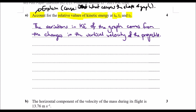We can start by explaining why t1 has the smallest value: at t1, vy is equal to zero.